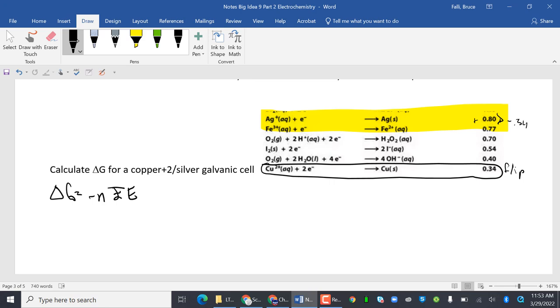I'm going to write these down. Ag positive plus electrons gives me silver, and that's positive 0.80 volts. Copper gives me copper plus two plus two electrons, and that's negative 0.34 volts. So my overall voltage is going to be 0.46 volts.